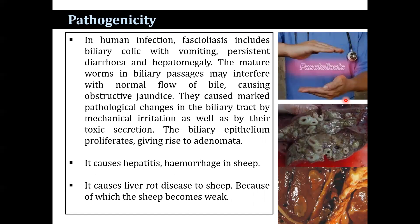In human infection, fasciolosis includes biliary colic with vomiting, persistent diarrhea, and hepatomegaly. The mature worms in the biliary passage may interfere with the normal flow of bile, causing obstructive jaundice. They cause marked pathological changes in the biliary tract by mechanical irritation as well as by toxic secretions. The biliary epithelium proliferates, giving rise to adenomata. In sheep, it causes hepatitis, hemorrhage, and liver rot disease, because of which the sheep becomes weak.